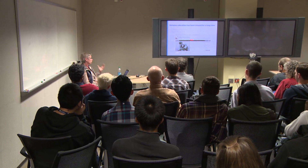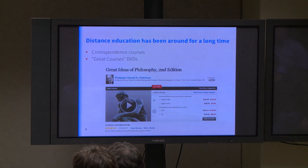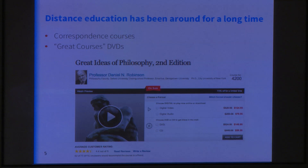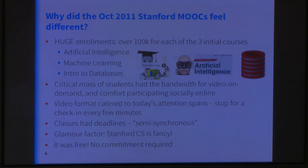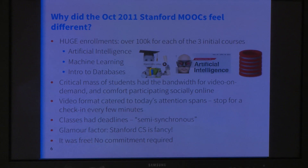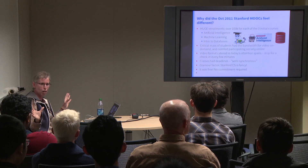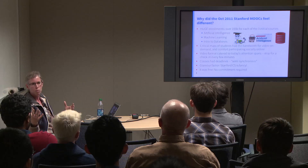Distance education has been around for a long time — correspondence courses, great courses on DVDs. But you didn't read articles in the New York Times every week about how DVDs were going to change the face of higher education, whereas now you do. What was different this time? The current wave of MOOCs — sometimes called X MOOCs — got started at Stanford in October of 2011 with three courses. There have been other things called MOOCs before that, better in some ways, worse in some ways, different. I'm simply referring to the current wave as this wave that started with those three.